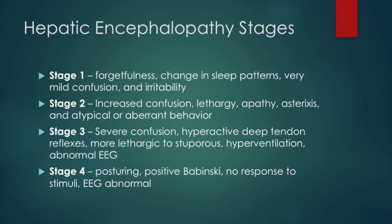Hepatic encephalopathy stages are due to high ammonia levels. Stage one: forgetfulness, change in sleep patterns, mild confusion, and irritability — EEG is normal. Stage two: increased confusion, lethargy, apathy, asterixis (hand tremor), and aberrant behavior — EEG is still normal. Stage three: severe confusion, hyperactivity, deep tendon reflexes present, lethargy to stupor, hyperventilation, and an abnormal EEG. Stage four: posturing, positive Babinski reflex, no response to stimuli, and abnormal EEG.